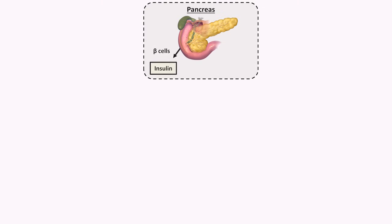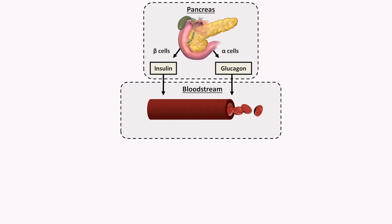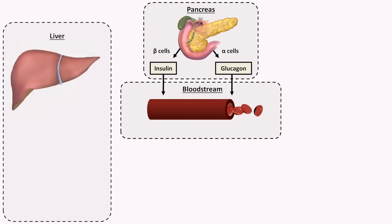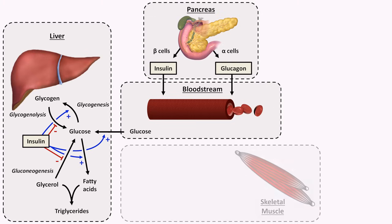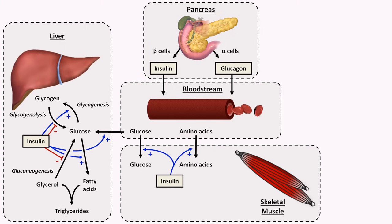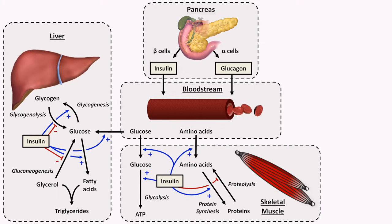Introducing just a little more detail to that model: insulin is produced by the beta cells of the pancreas and glucagon by the alpha cells. These hormones then enter the bloodstream and travel throughout the body. Although they act on just about every tissue and organ, there are three particularly important sites. First is the liver, which along with skeletal muscle is responsible for energy storage in the form of glycogen. Insulin's effect in the liver is to bring excess glucose from the blood into liver cells, where it will be converted to glycogen, fatty acids, and triglycerides. Insulin also acts in skeletal muscle, where it promotes entry of glucose and amino acids. Amino acids are used in the synthesis of new proteins, while the glucose is used in glycolysis to produce ATP. Some glucose may also be converted into muscle glycogen as energy to be used later.